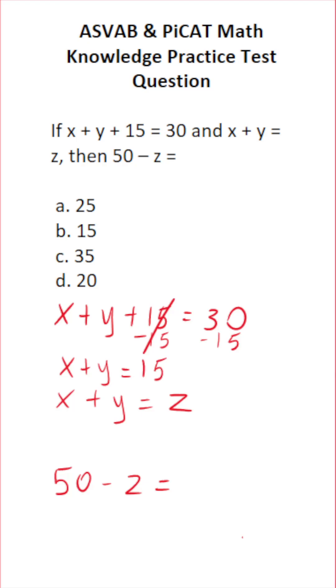So we can see x plus y equals 15, and here we have x plus y equals z. Well, clearly, we know z is 15. Now that we know z is 15, we can go ahead and plug it in here. This becomes 50 minus 15, which is 35. And so our answer is 35.